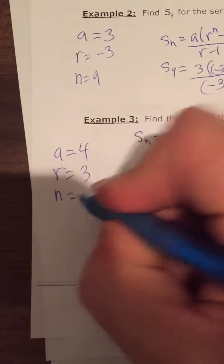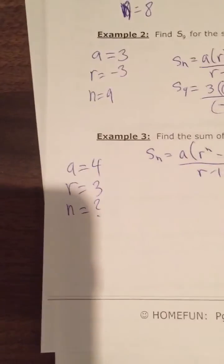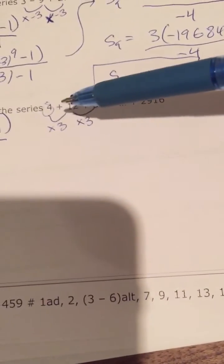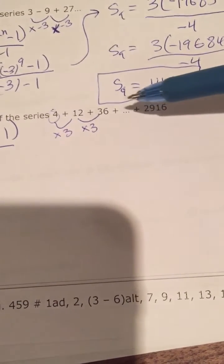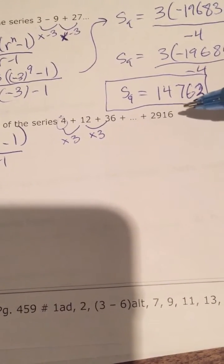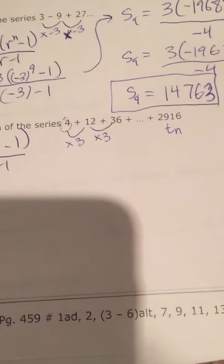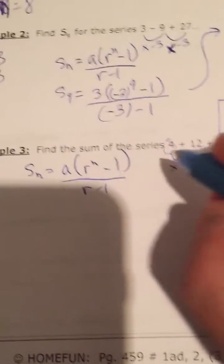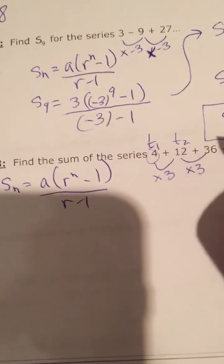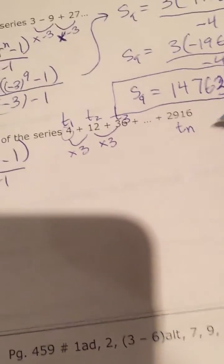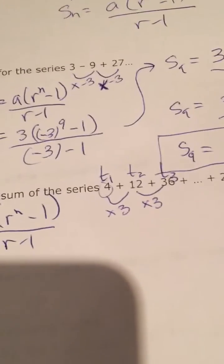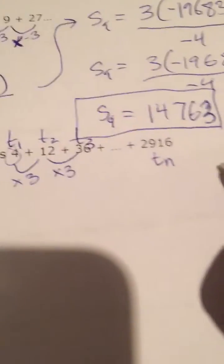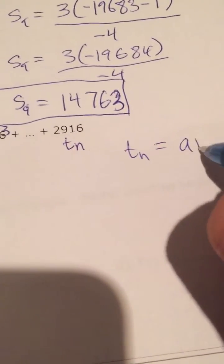The only thing we don't know is the N value — how many terms are there? We know the series starts 4, 12, 36, with 2,916 at the end as term N, but we don't know what term number that is. To figure that out, I'll use the term number formula for a geometric pattern: TN equals A times R to the N minus 1. We know A is 4, R is 3, and TN is 2,916. We're solving for what term number 2,916 is.